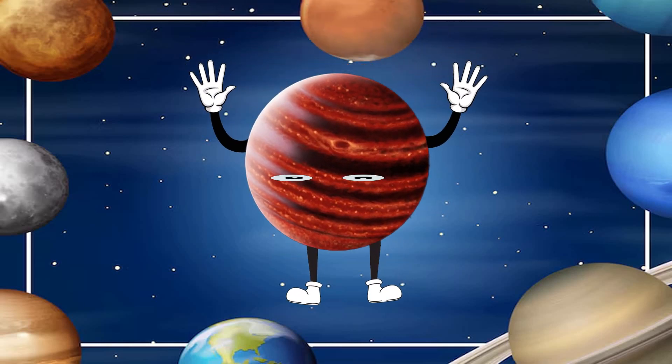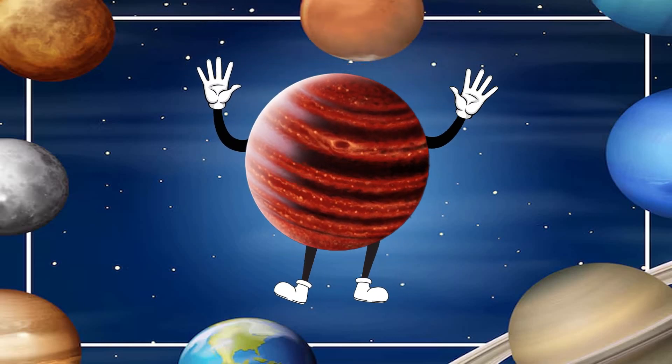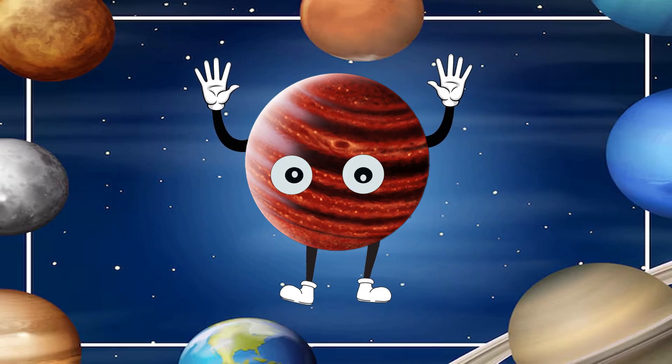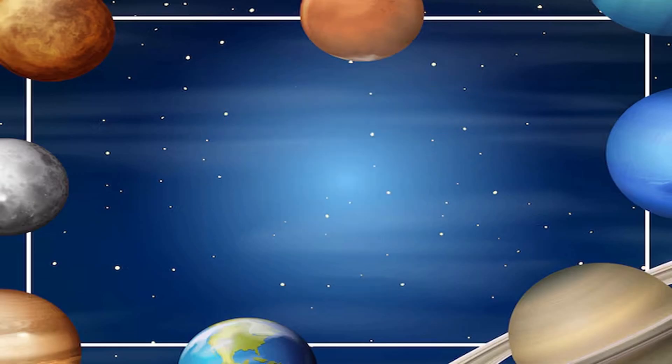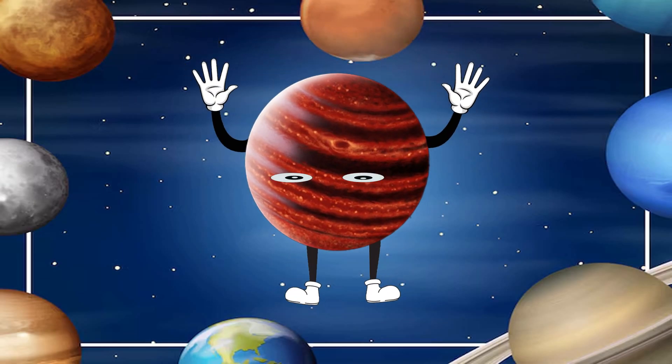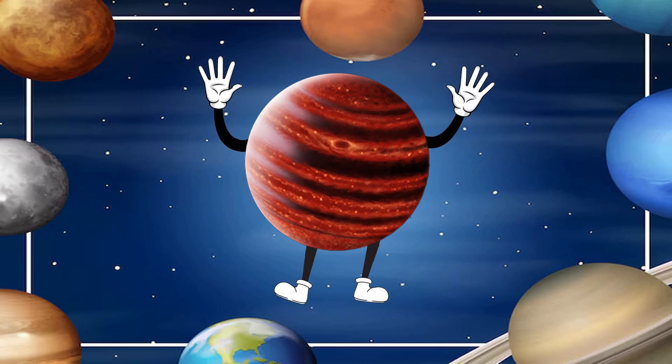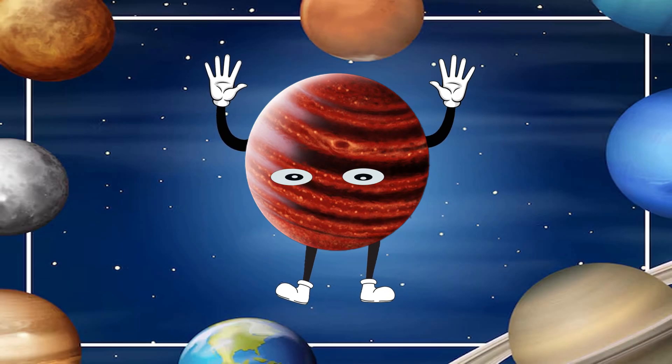My name is Mercury, I'm the second hottest planet, the closest one to the sun. A year on my surface is 88 days, I'm the smallest but I'm lots of fun.